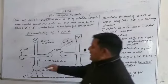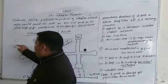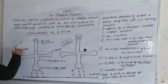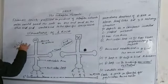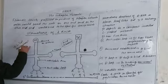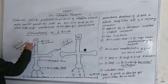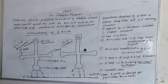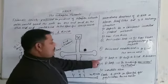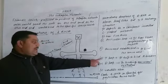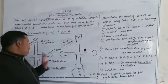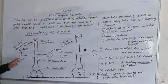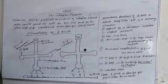Next is D loop. D loop also binds to ribosomes and aminoacyl synthetase enzyme.